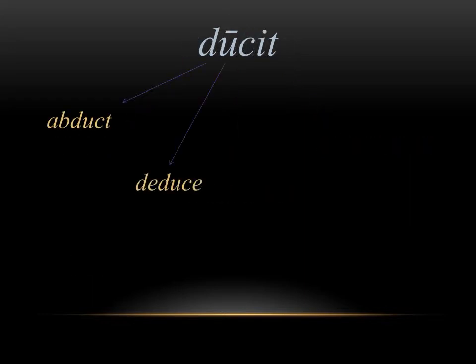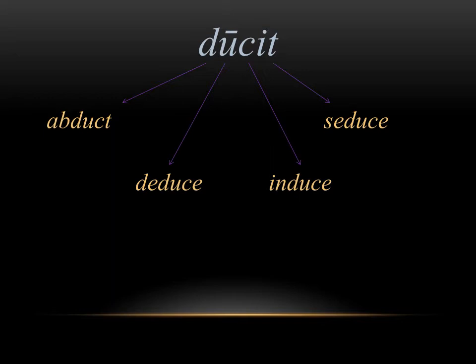From ducit, we get a few English derivatives including abduct, deduce, induce, and seduce. You can see how they're all related to this root of he or she leads. If someone is abducted, it literally means they've been led away. And if someone is seduced, you're trying to lead them towards you. A few derivatives that might help you are the words duke and duchess, which are two words for leaders — the male and female leaders of a country.